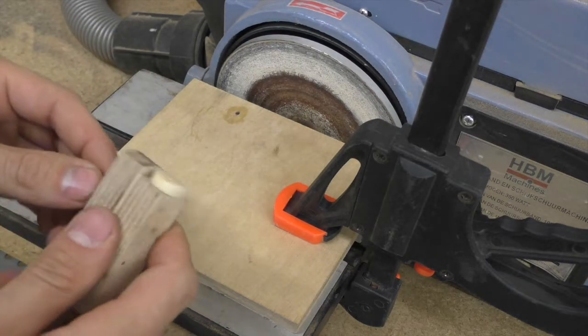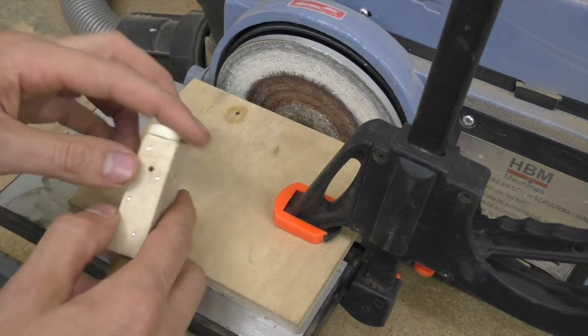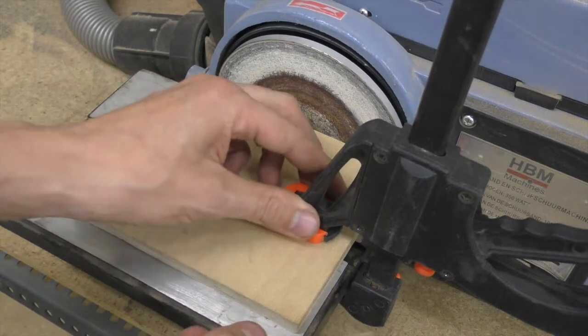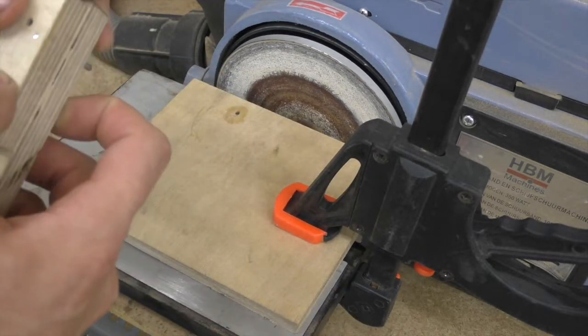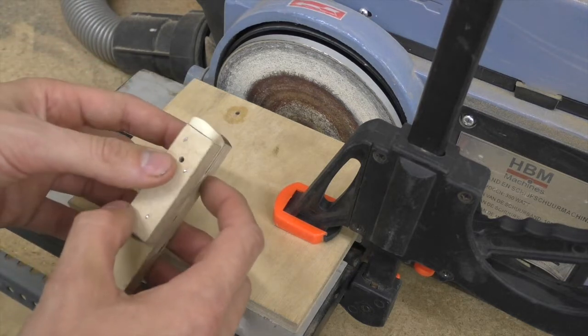You may have noticed me just adjusting the jig slightly there. What I was doing was moving it a little bit closer towards the grinder because the vibration was bringing it away a little bit even though it's clamped down. So you do have to kind of do this a little bit by eye, a little bit by feel somehow.